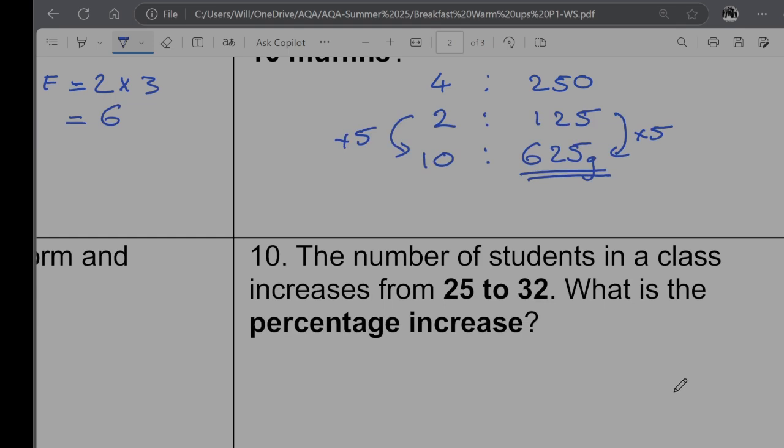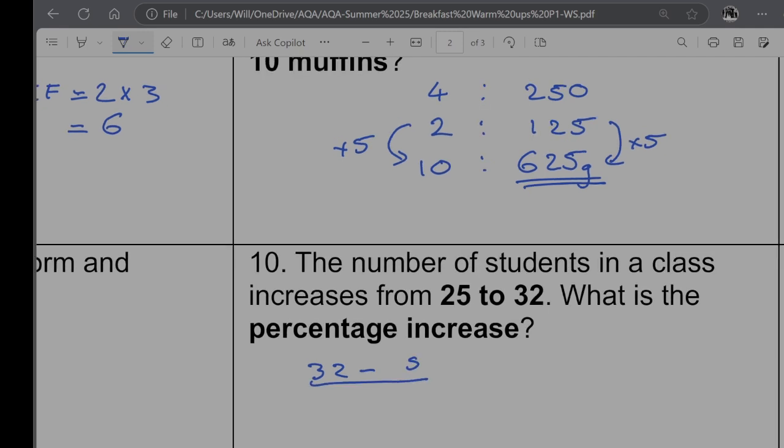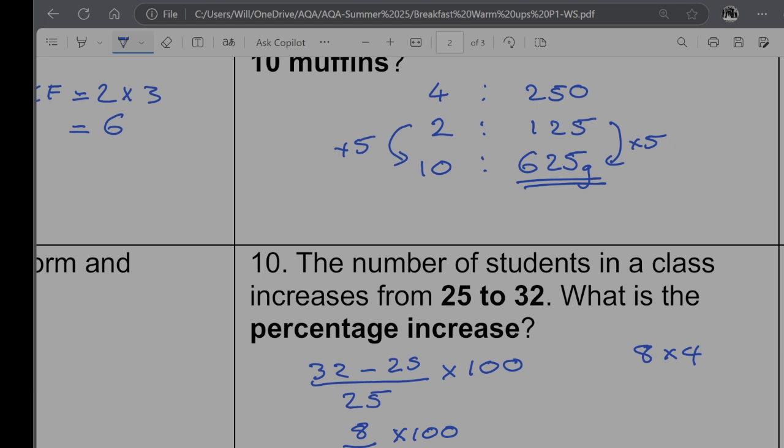And question 10, the number of students in a class increases from 25 to 32. What is the percentage increase? So I'm going to say that the change is going to be 32 minus 25, and I want to divide that by the original amount. The original amount is 25. And then I'm going to times it by 100. So that's going to become 8 over 25 times by 100. So I know that 100 divided by 25 is going to be 4. So I'm just going to go and do 8 times by 4, which would give me 32%.